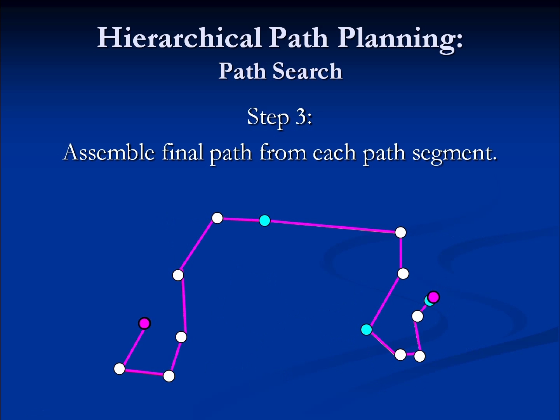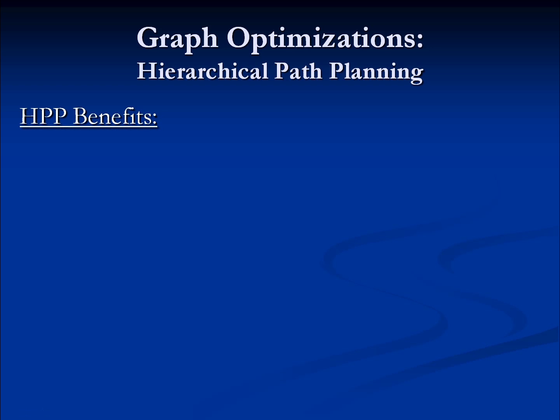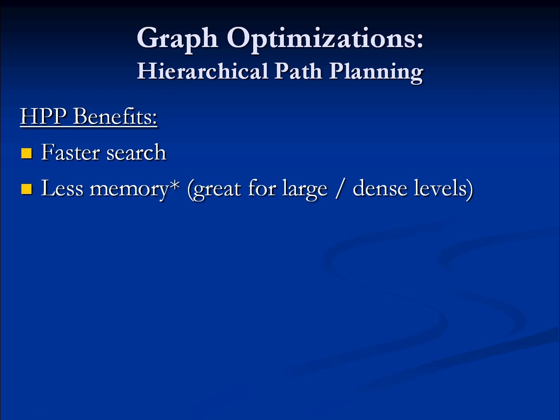The benefits of hierarchical path planning: the first two go hand-in-hand — it's a faster search and tends to have less memory overhead. Any one search will have fewer vertices and fewer nodes to search through, meaning less memory usage and fewer algorithm steps to get a result. Another benefit is that if it's going to fail to find a path, it usually fails faster — we might fail on the high-level graph and never even need to search the lower-level graph.